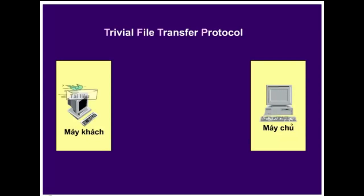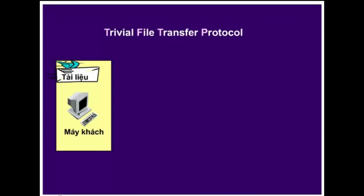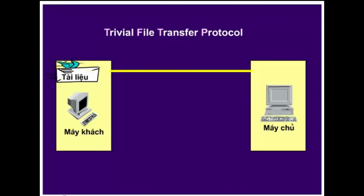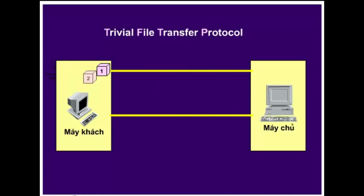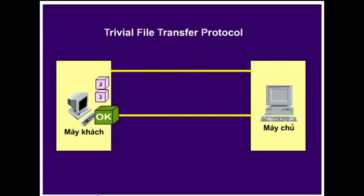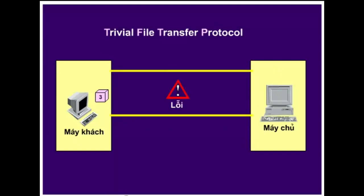TFTP hoạt động theo các nguyên tắc rất đơn giản. Khi truyền tệp bằng TFTP, gói tin đầu tiên sẽ thiết lập một kết nối khách-chủ. Các gói tin riêng biệt của một tệp sẽ được đánh số tuần tự. Gói tin đã được truyền phải được xác nhận trước khi có thể gửi gói tiếp theo.